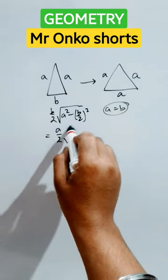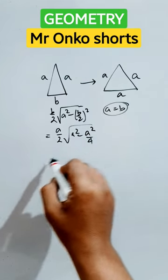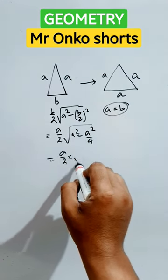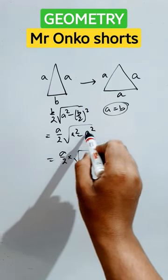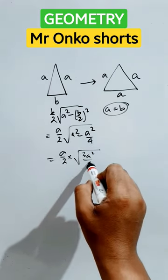That is a/2 times square root of (a² minus a²/4). Here it is a/2 times square root. Take LCM. It is 4a² minus a², that is 3a²/4.